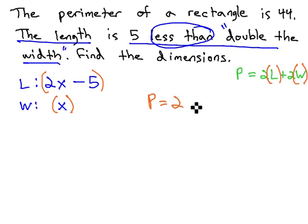Perimeter is equal to 2 lengths, which would be 2x minus 5, plus 2 widths, which would be simply x.